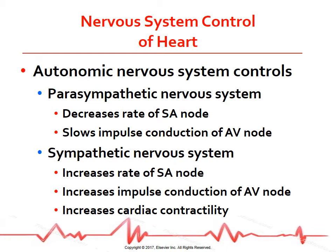The autonomic nervous system plays an important role in the rate of impulse formation, speed of conduction, and strength of cardiac contraction. The components affecting the heart are the vagus nerve fibers of the parasympathetic nervous system and the nerve fibers of the sympathetic nervous system. Stimulation of the vagus nerve causes a decreased rate of firing of the SA node and slowed impulse conduction of the AV node. Stimulation of the sympathetic nerve increases SA node firing, AV node impulse conduction, and cardiac contractility.